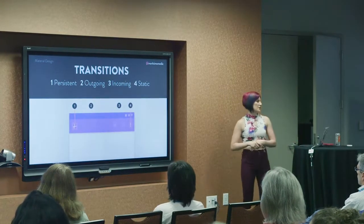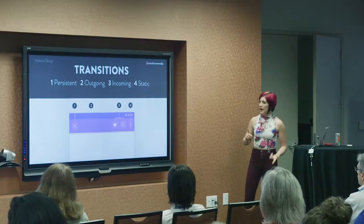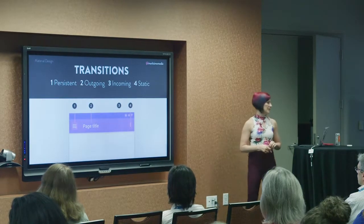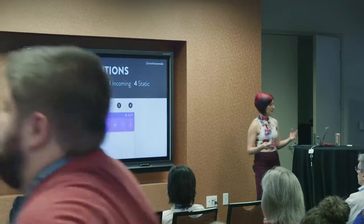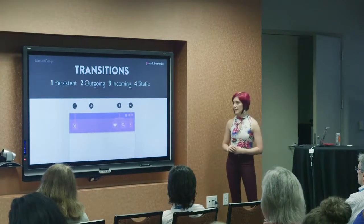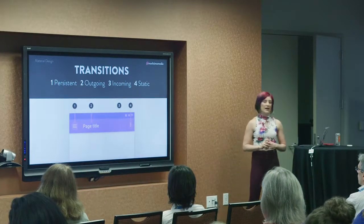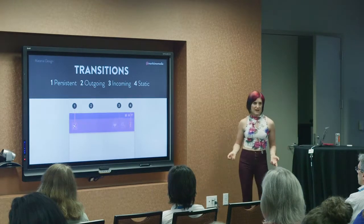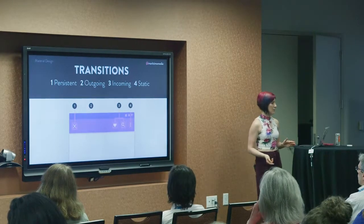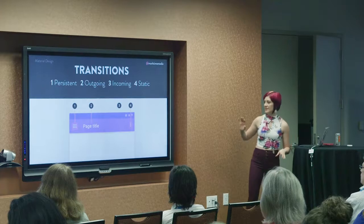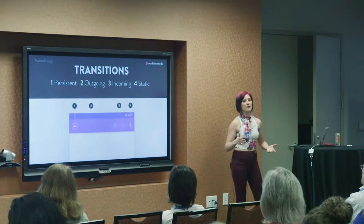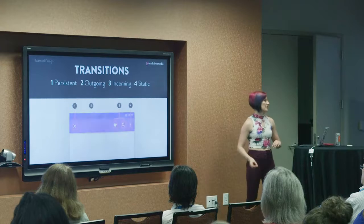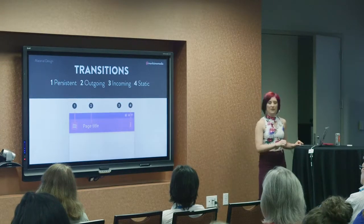Next, transitions. There are several different things that objects can do. An object can be persistent — it stays on the screen, stays on the stage. It can be incoming — it wasn't there, and then it enters the stage. It can be outgoing — it leaves the stage. Or it can be static — it isn't animated, but it's still an object that other objects can interact with, so it's still important as part of the animation. These are basically all of your different transitions.